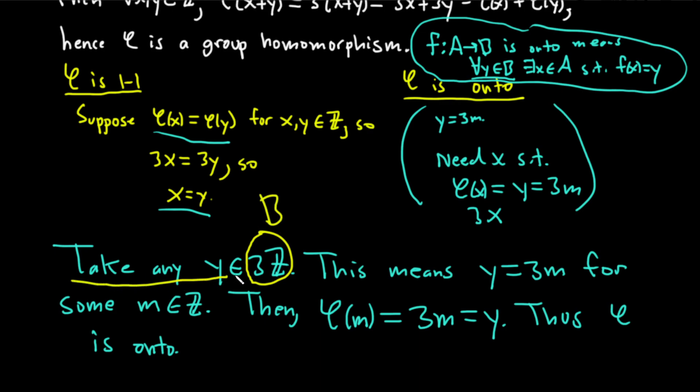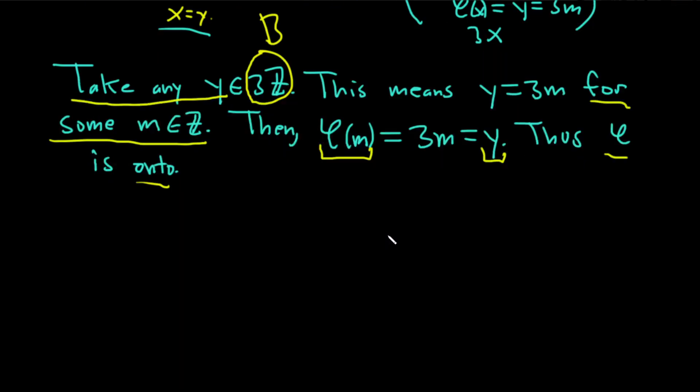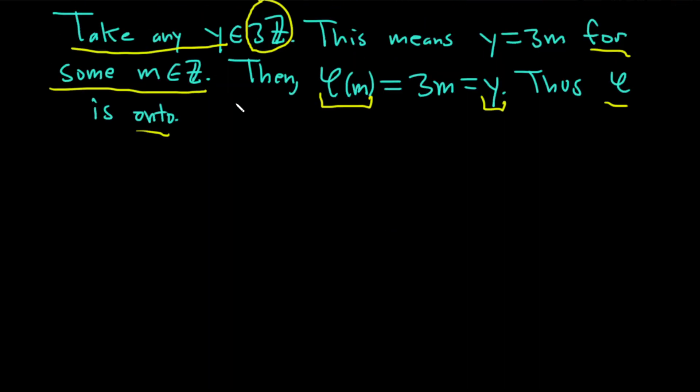Our b is this. We said take any, so for every y in b, we have to show there exists x in a. For some m in Z, that's the existence part. And then such that f of x equals y, that's phi of m equals y. Thus, phi is onto, and that completes everything. We have that it's one-to-one, it's onto, and it's a group homomorphism. Therefore, it's an isomorphism.